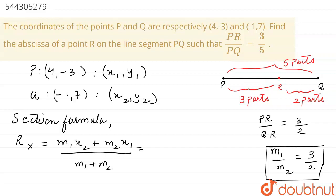The value of m1 is 3. So, 3 times x2, x2 is -1, plus m2 is 2, and x1 is 4, whole upon m1 plus m2, that is 3 plus 2. This will give me -3 plus 8 upon 5. The x-coordinate of point R will be equal to 8 minus 3, that is 5 upon 5, that is 1.